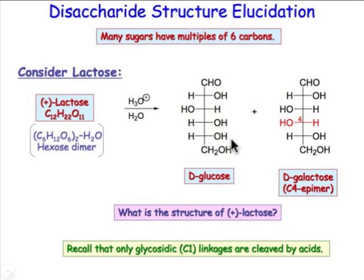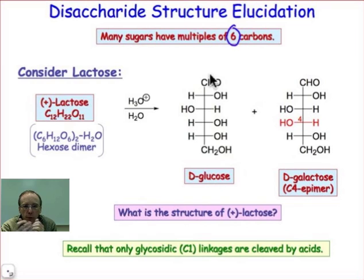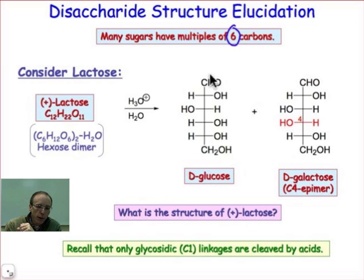Lactose, like many other disaccharides, is a sugar that has a multiple of 6 carbon atoms, and the reason is that disaccharides are often formed from hexoses. When 2 or more hexoses come together, they will have an integer number of 6 carbon atoms in the formula, and lactose is a C12 disaccharide.